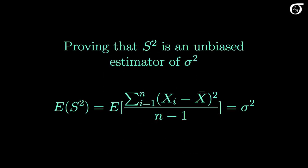In this video I'm going to prove that the sample variance s squared is an unbiased estimator of the population variance sigma squared. This will give some motivation for why we divide by n-1 and not n in the sample variance formula.